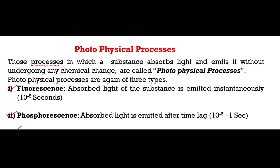Fluorescence is when the absorbed light of the substance is emitted instantaneously — that phenomenon is called fluorescence. In phosphorescence, the absorbed light of the substance is emitted after some time; the substance absorbs light and after some time it emits the light. This process is called phosphorescence.